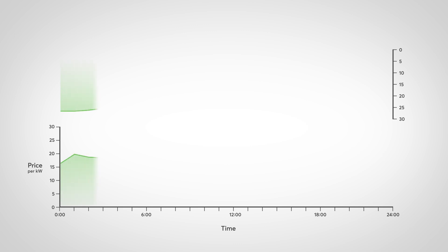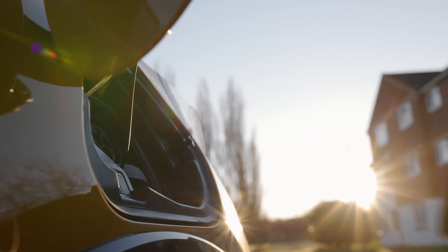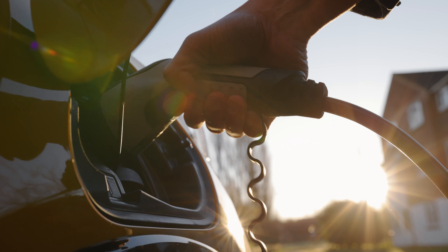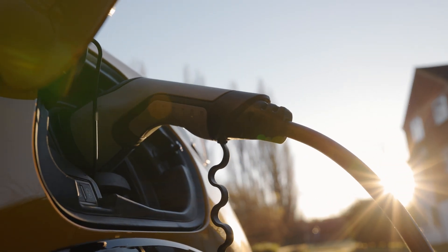This means that electricity prices fluctuate extremely, depending on the time of day. With a variable tariff, the price is determined depending on the demand and need. If the electricity supply is higher than the demand, the price could technically even go negative. But who actually benefits from dynamic electricity prices? In a nutshell, everyone who is flexible enough to use energy when it's cheapest, and this way electricity costs can be reduced massively.